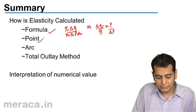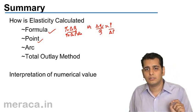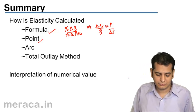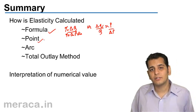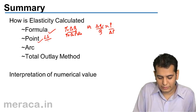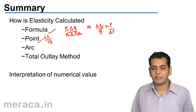Point elasticity is always measured when the demand curve is a straight line, and the formula to calculate point elasticity is lower segment divided by upper segment.